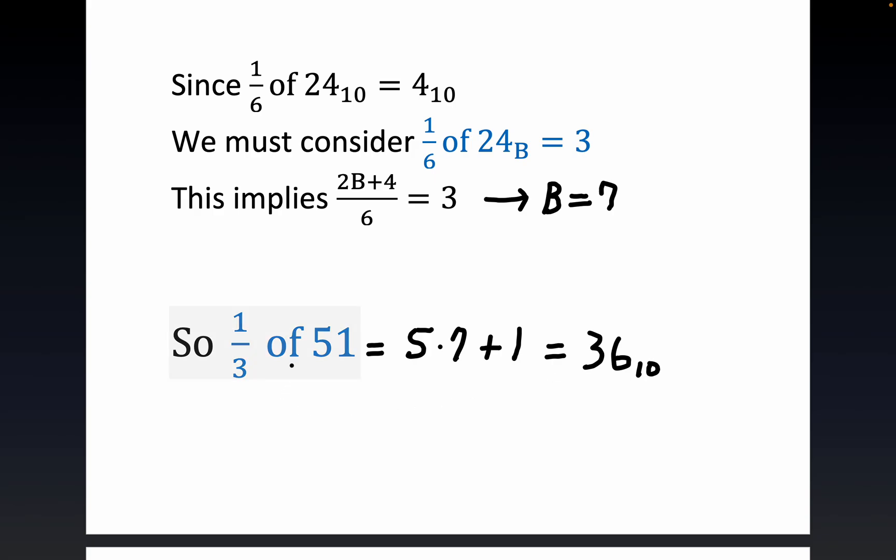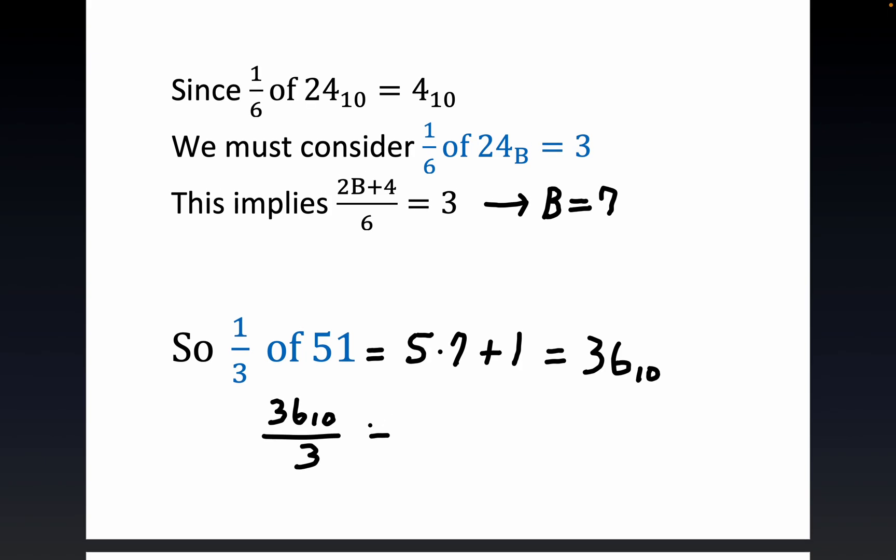So 36, 1/3 of 51 base 7 would be 36. 3 is a digit in base 10 and base 7. So we can write down 36 base 10 divided by 3 is equal to 12 base 10. So this is equal to 12 base 10.